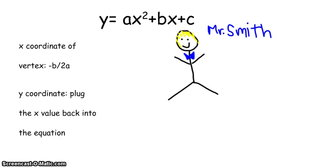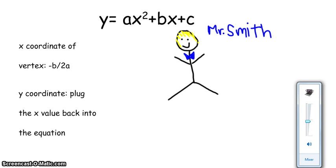And if the number is less than 1, it is a wider parabola. Negative numbers face downwards, and positive numbers face upwards.